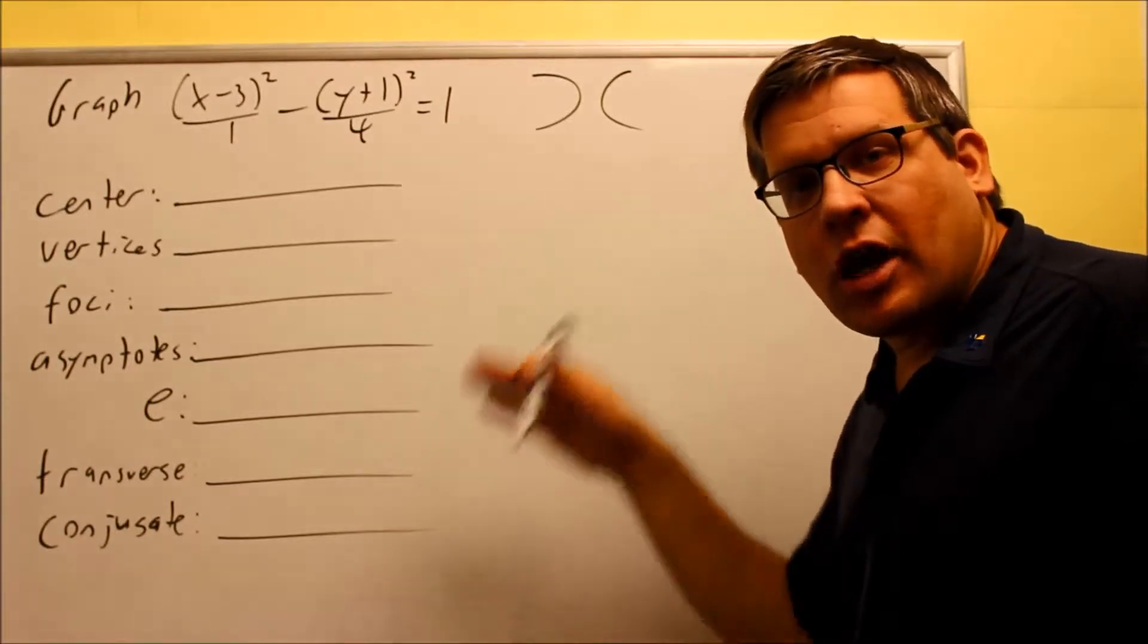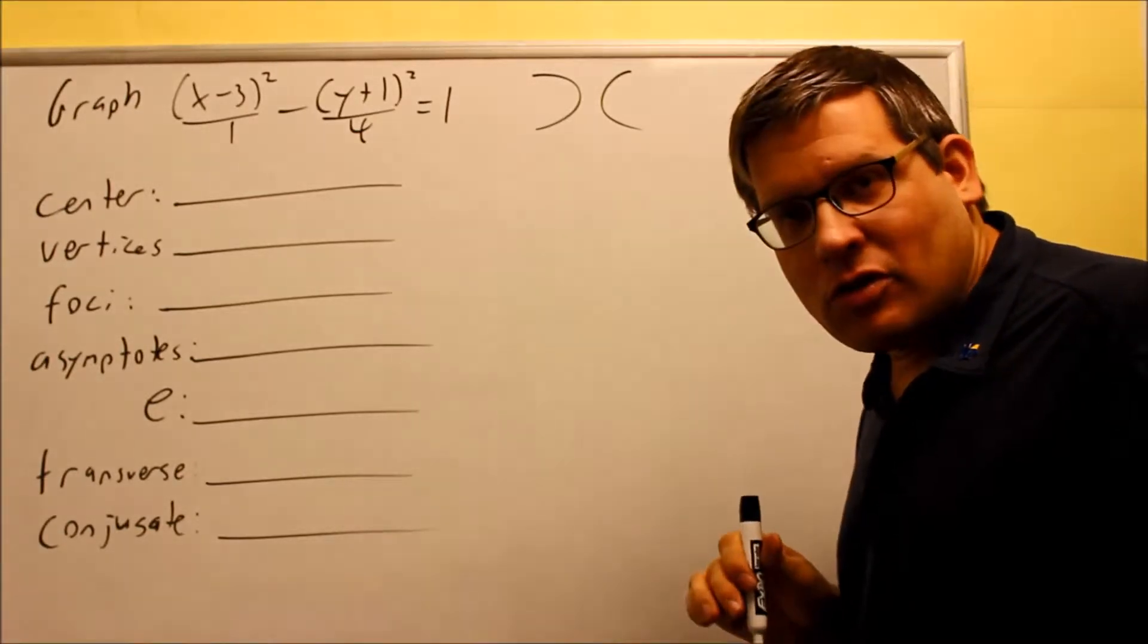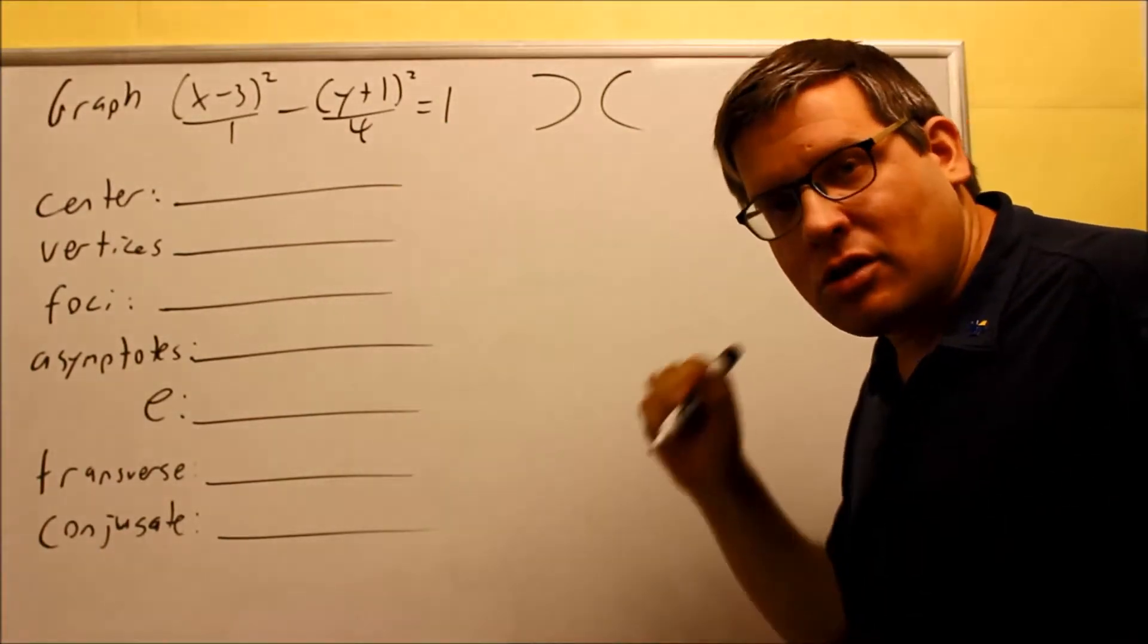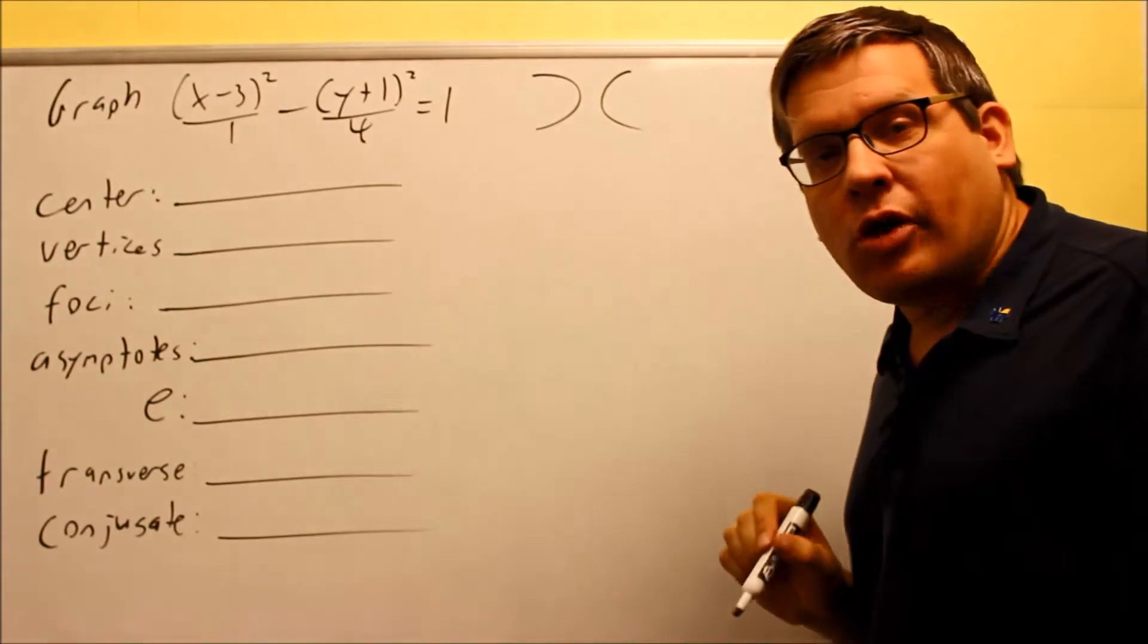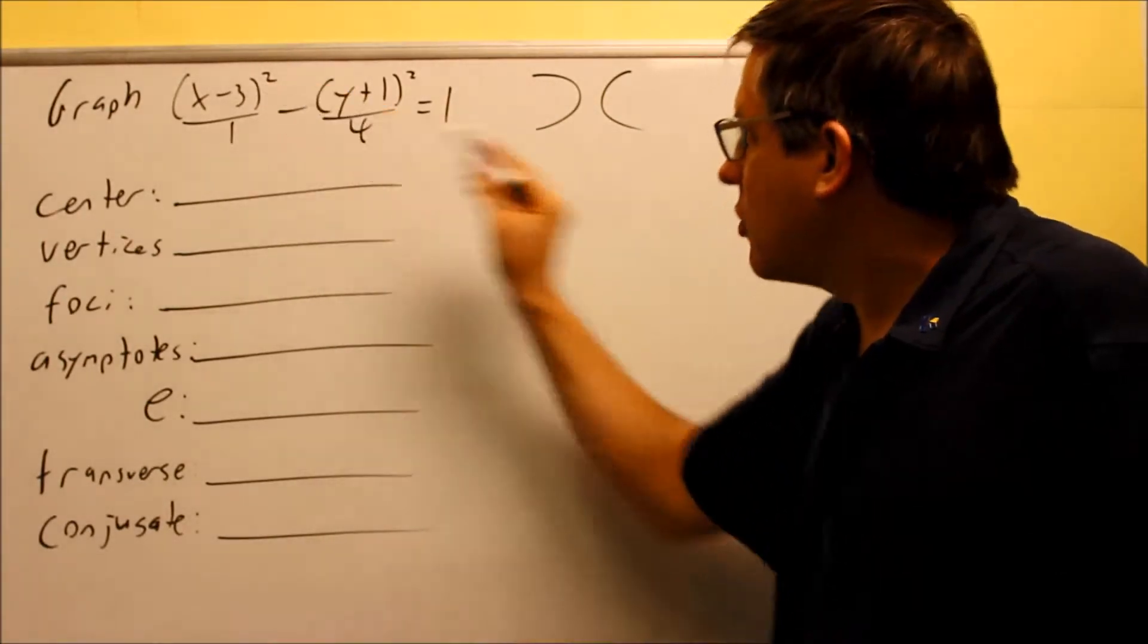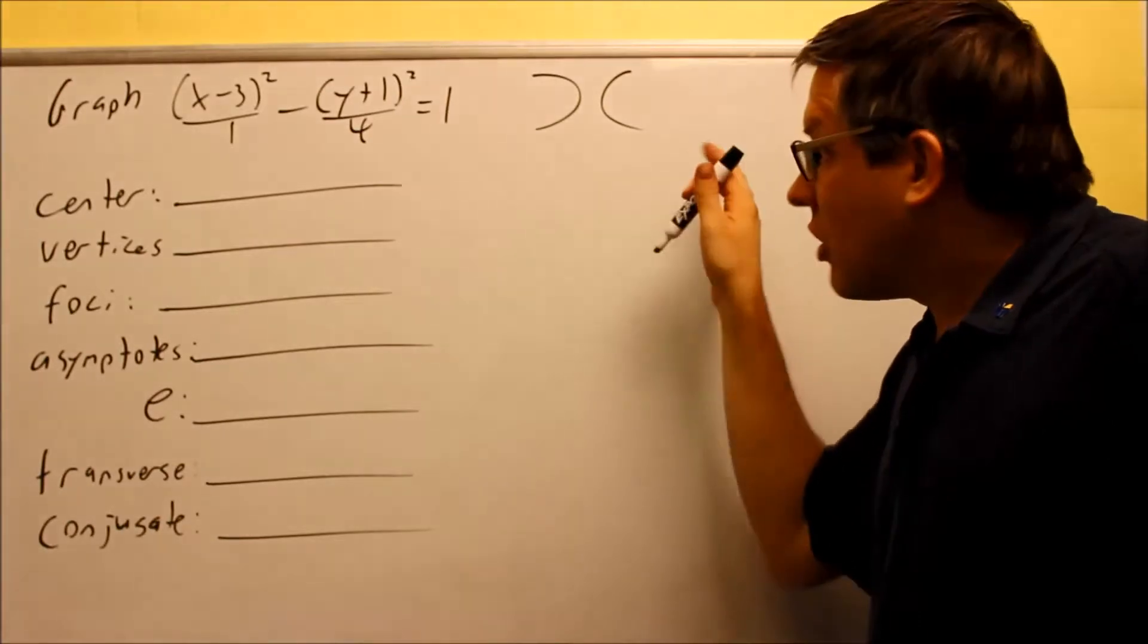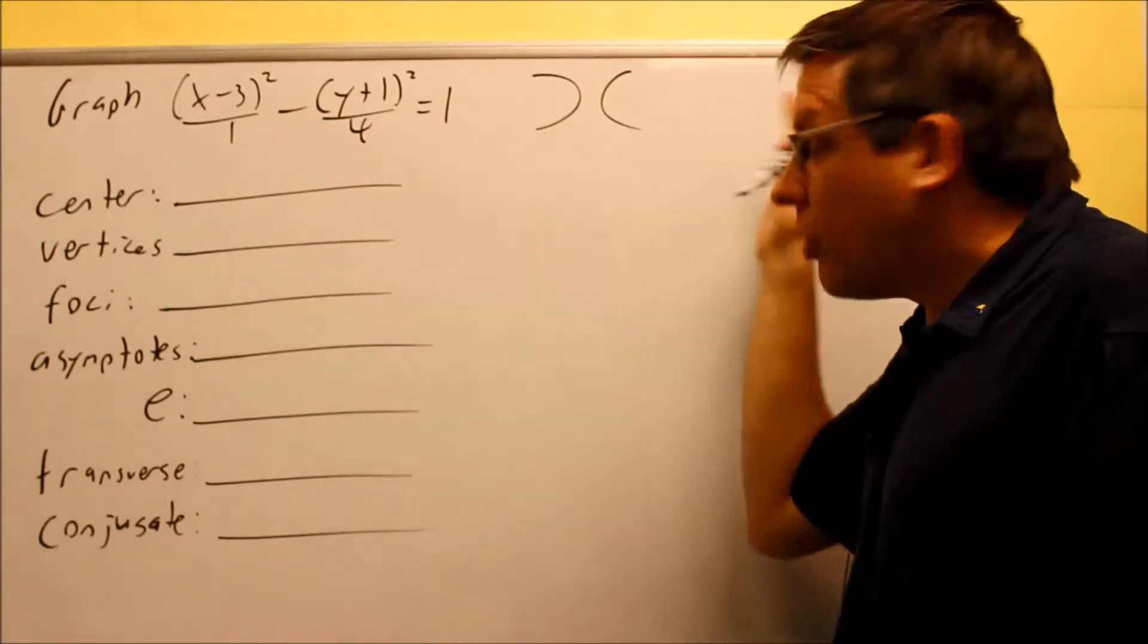Now, what you might be noticing is, wouldn't it open up and down because the larger number is underneath the Y? No, that's for ellipses. We don't have an ellipse here. We have hyperbolas. Hyperbolas are different. So it has nothing to do with if A or B is larger. It has to do with which variable actually comes first. So if X comes first, that's all you have to know to realize that it opens up sideways.